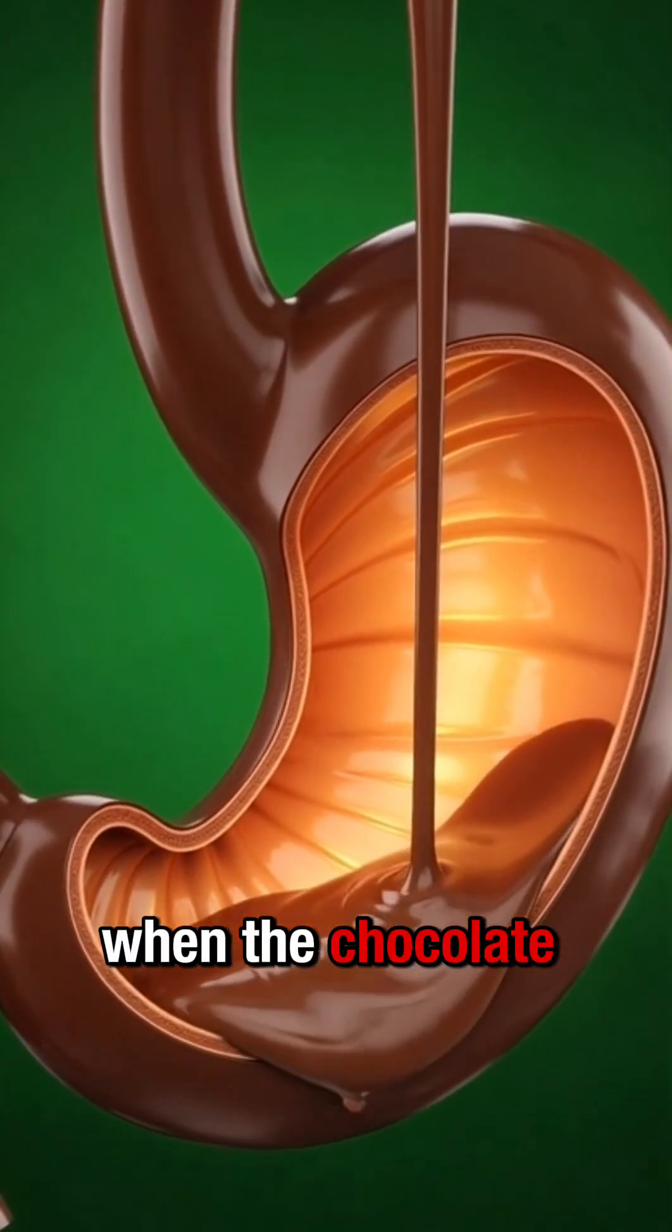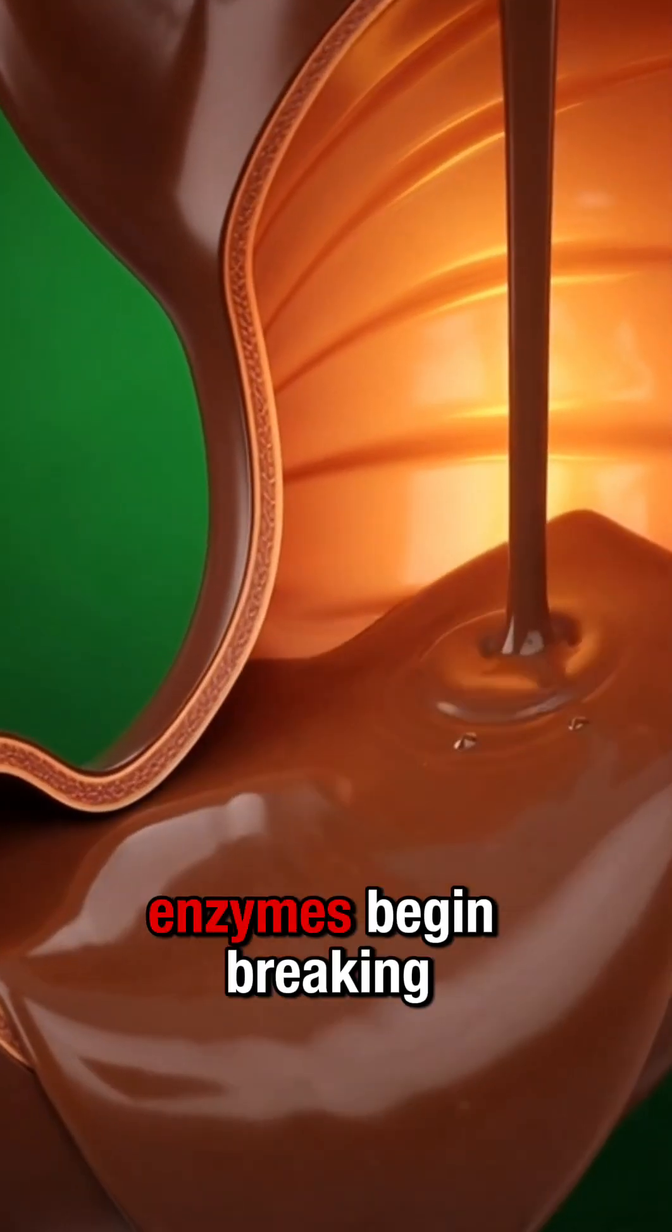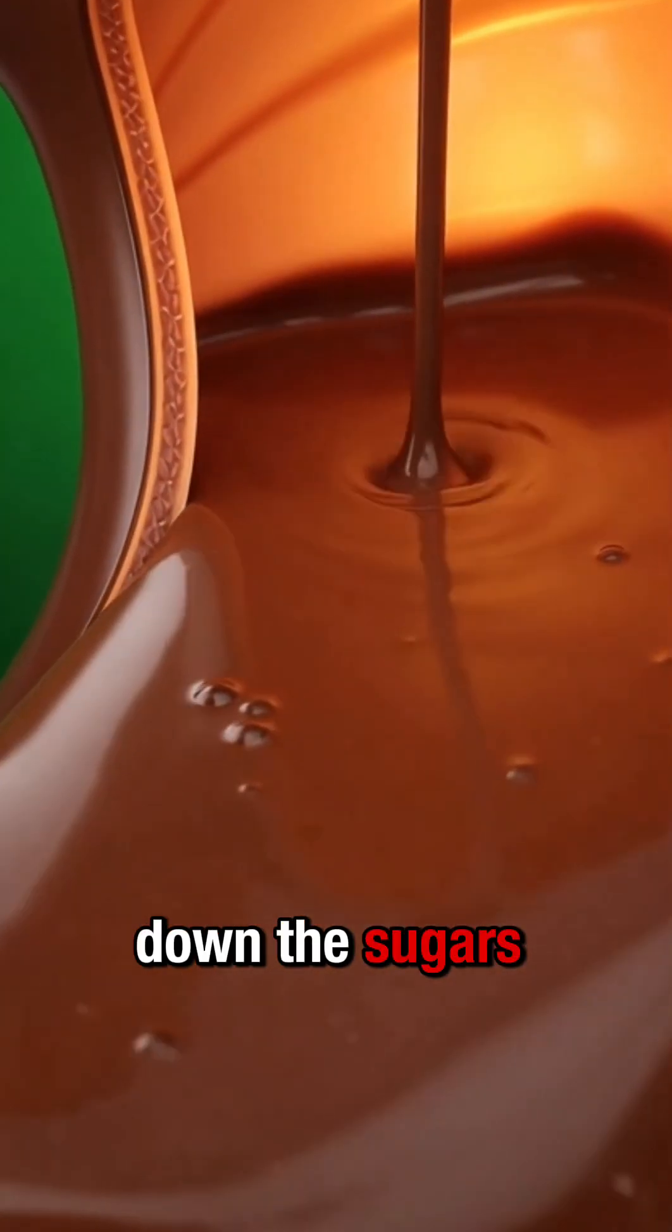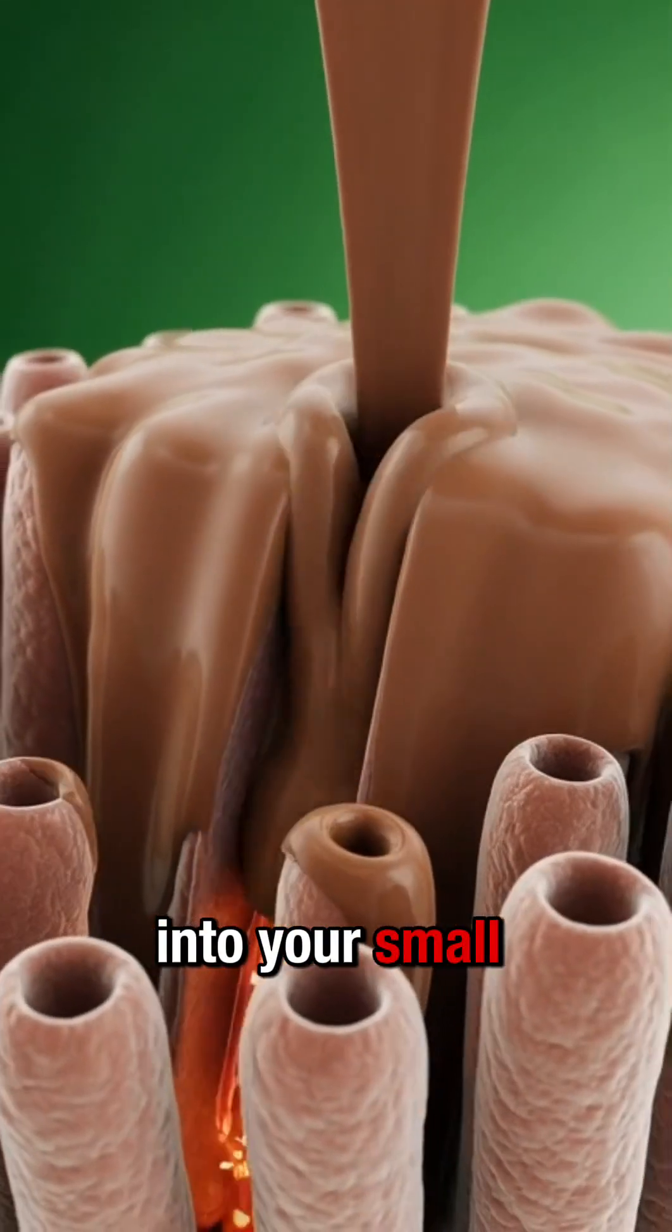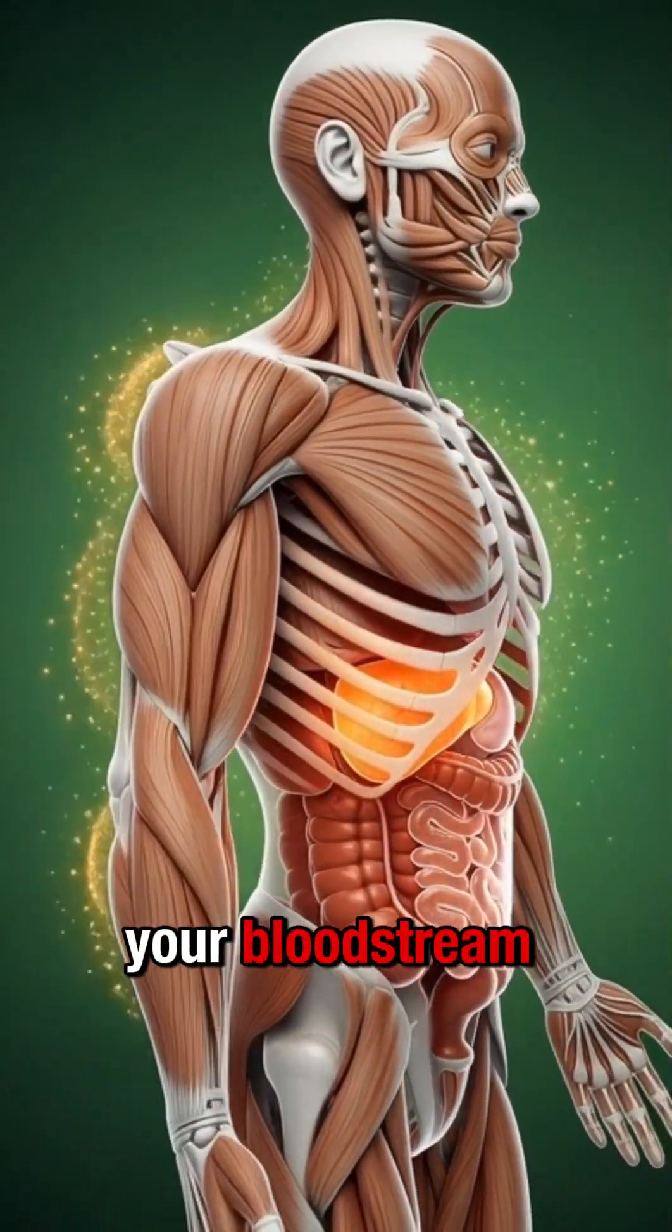When the chocolate milk reaches your stomach, enzymes begin breaking down the sugars, fats, and proteins. From there, the mixture moves into your small intestine, where nutrients are absorbed directly into your bloodstream.